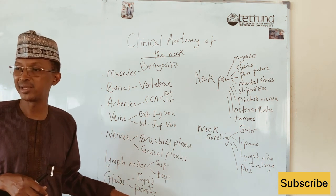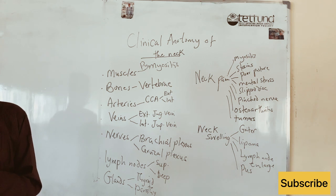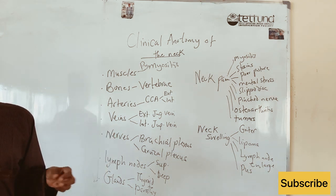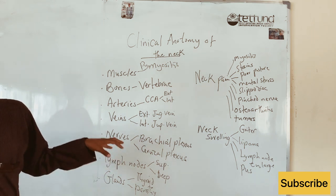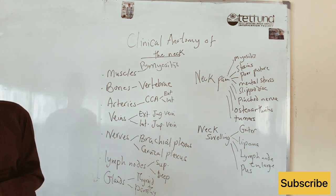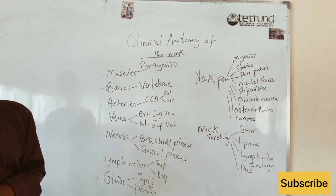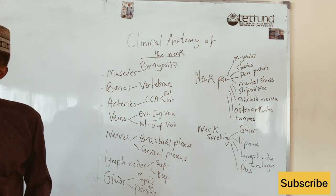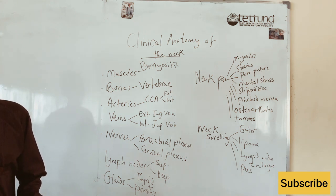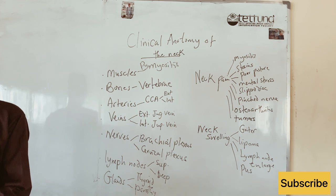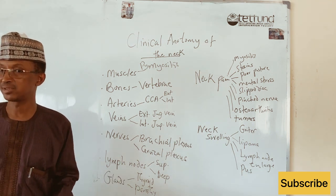Similarly, the parathyroid glands, being very small, can accidentally be removed during thyroidectomy. The parathyroid gland is responsible for maintaining calcium levels in the circulation. Excessive secretion of the parathyroid gland — hyperparathyroidism — increases calcium in the blood by mobilizing it from the bones, causing the bones to become very thin. With even small trauma, the person can easily fracture a bone because of this thinning.